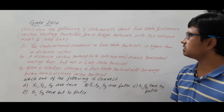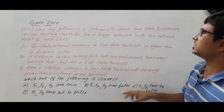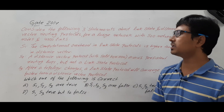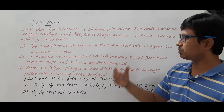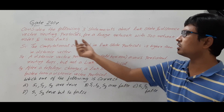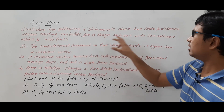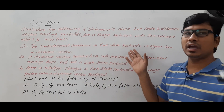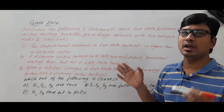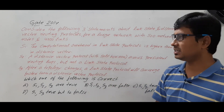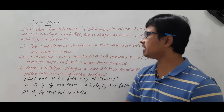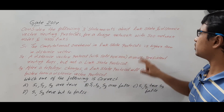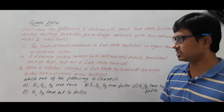Consider the following three statements about link state and distance vector routing protocols. They have given three statements — S1, S2, S3 — about the link state routing algorithm and distance vector routing protocol for a large network with 500 network nodes and 4000 links. So we have 500 nodes and between them we have 4000 links. Statement S1: the computational overhead in link state protocols is higher than in distance vector.